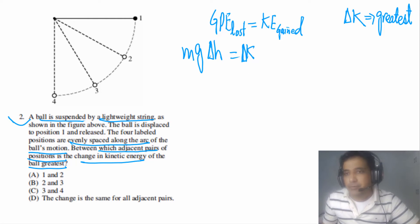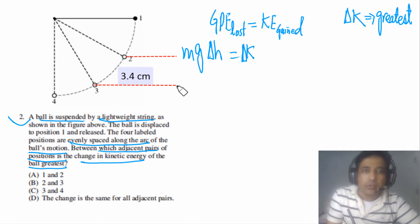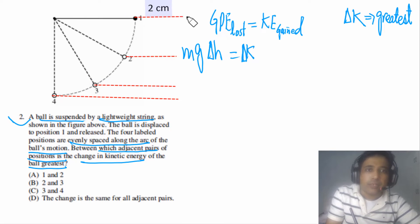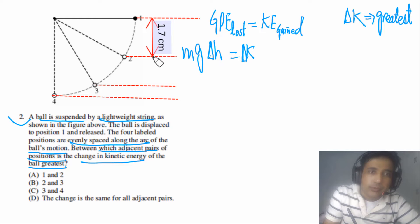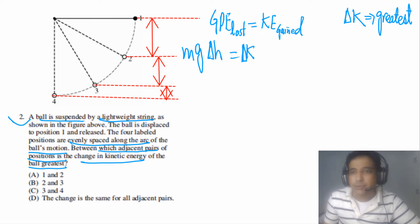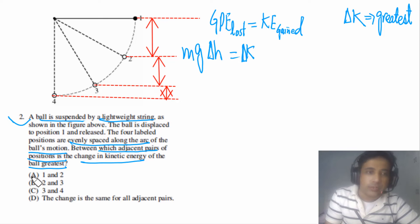To find where Δh is greatest, we draw horizontal lines at each of the four positions. Comparing the vertical spacing between adjacent positions, the gap is clearly greatest between positions 1 and 2. Therefore the change in GPE is greatest there, meaning the change in kinetic energy is also greatest. The answer is A, between positions 1 and 2.